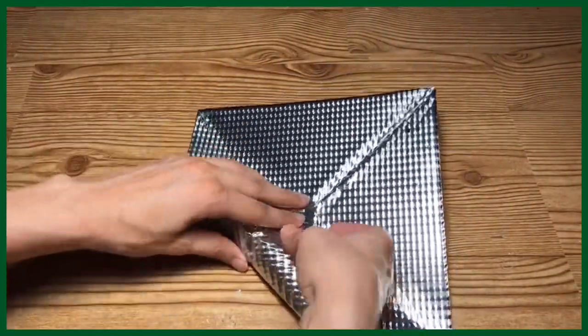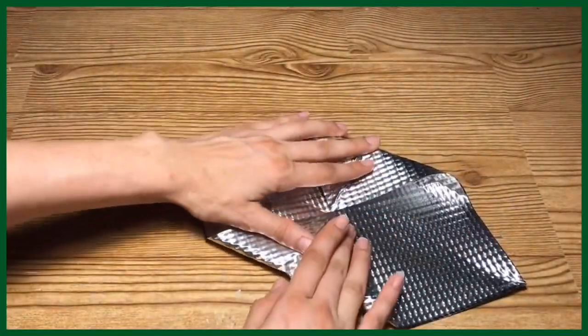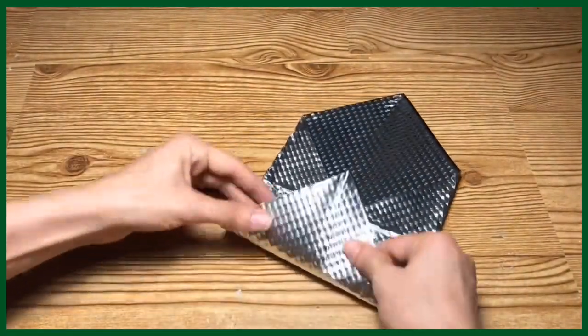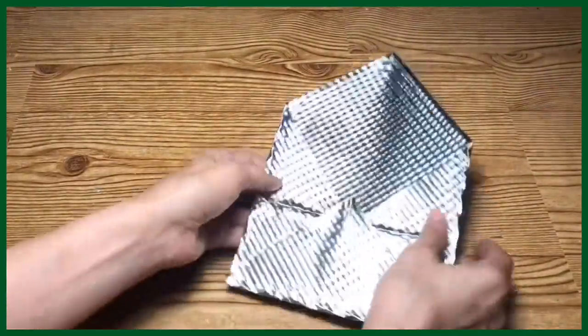Once I have that done, I'm going to take one of the corners and fold it up to that first fold line and do the same on the second, basically just folding it into an envelope shape, and then just smoothing it out.